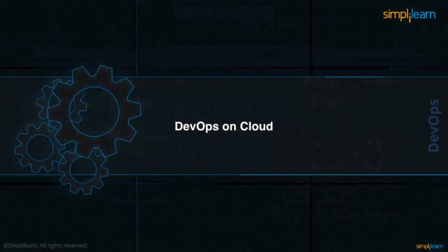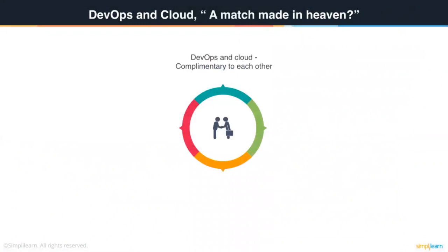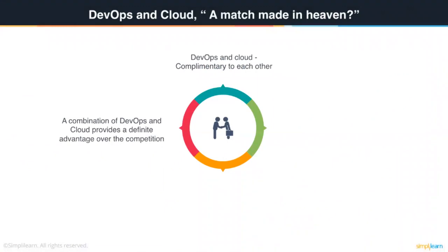Now let's try and understand the relationship between DevOps and cloud, which are two of the most happening technologies at the moment. The first and most important point is that they are complementary to each other. There are a lot of principles and technologies common to DevOps and cloud. If you implement DevOps, you are helping your cloud infrastructure, and if you have a cloud infrastructure, it actually helps you get on a DevOps framework much quicker. A combination of DevOps and cloud provides a definite advantage over your competition.